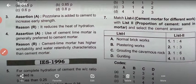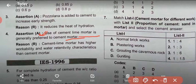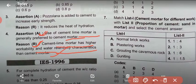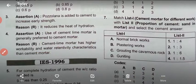Question 4 (Assertion-Reason): Assertion - Use of cement lime mortar is generally preferred to cement mortar. Reason - Cement lime mortar has higher workability and water retentivity characteristics than cement mortar. Cement lime mortar has the good qualities of both cement and lime. It provides medium strength along with good workability, good water retentivity, freedom from cracks, and good resistance to rain penetration.